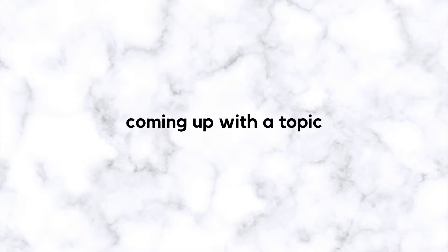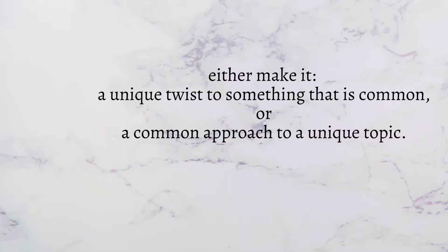Tip number one: coming up with a topic. Coming up with a good research question is just as important, if not more important, than writing the actual IA. The principles I use are two-fold. Number one, either make it a unique twist to something that's common, or you can use a common approach to a unique topic. For your science IAs — physics, bio, and chem — don't stress too much about having a completely novel research question because most things have already been done.